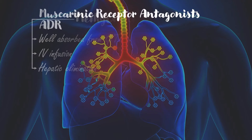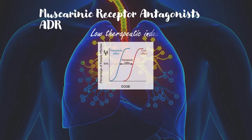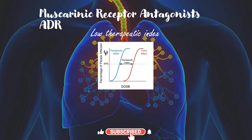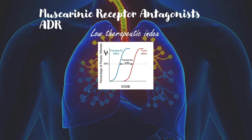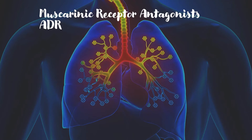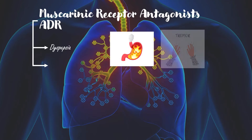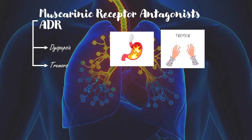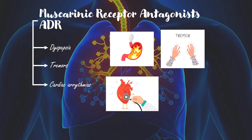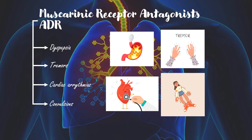Adverse effects: Methylxanthines have a low therapeutic index, so drug concentration should be considered with caution and patients monitored for the appearance of any adverse effects. Adverse effects include: dyspepsia, tremors, cardiac arrhythmias, and convulsions.